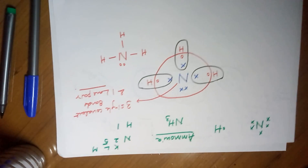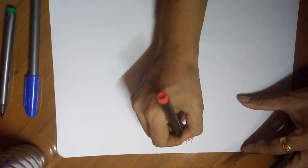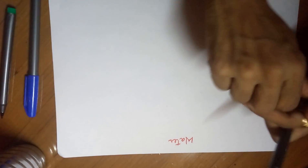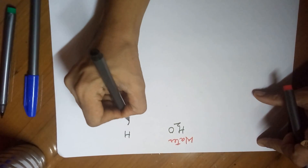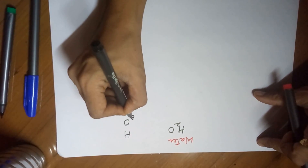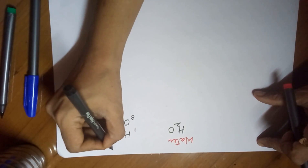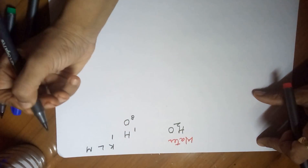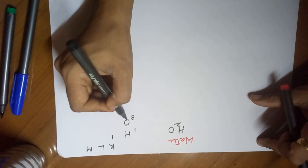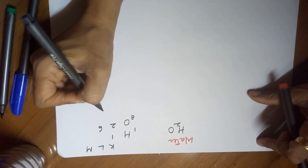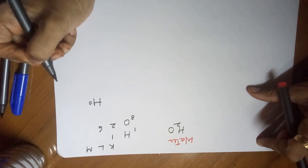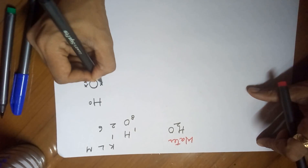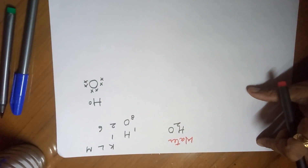Moving to the next example, which is water. The formula for water is H2O. The two atoms are hydrogen and oxygen, with atomic numbers 1 and 8. The electronic configuration: hydrogen has just one valence electron, whereas oxygen has 2 and 6, giving 6 valence electrons. So the Lewis dot structure of hydrogen has one dot, and the Lewis dot structure of oxygen has 6 electrons around it.